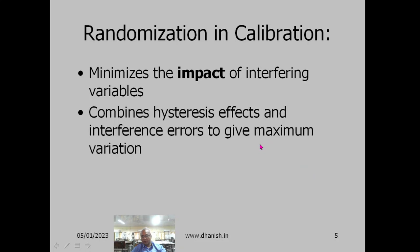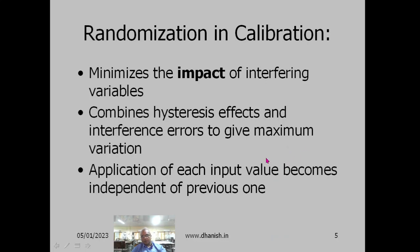Randomization will not reduce the variation — it will actually increase the variation. But the bias is avoided. There is no particular bias by carrying out the experiment in random order. Application of each input value becomes independent of the previous one. If you take readings in increasing order, the second input value depends on the previous value, and many of your statistical assumptions are violated. Formulae like standard deviation of the average — sigma by root n — are valid only if samples are taken in random order.